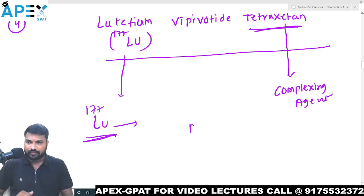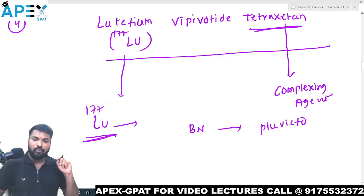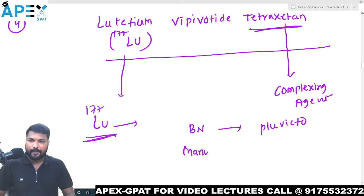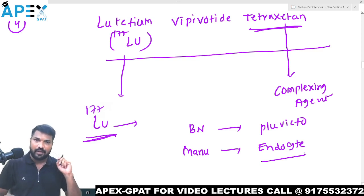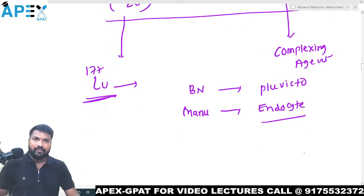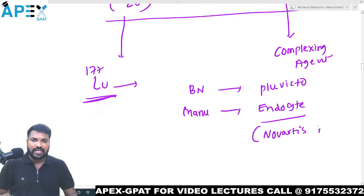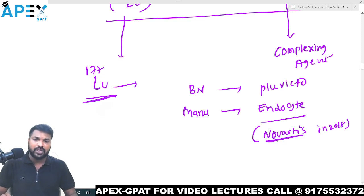The brand name of this drug is Pluvicto. The manufacturer is Endocyte, which was acquired by Novartis in 2018. So if you see Novartis in options, you can also tick that.